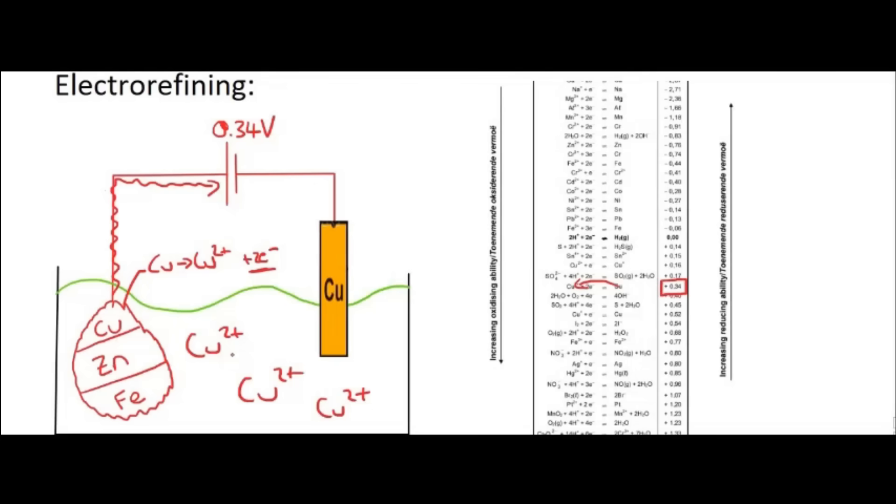But we have a little bit of a problem. Because this battery is actually going to be strong enough to cause the zinc and the iron to oxidize. Because check this out, everything above copper, look at the voltage values. They are lower, and some of them are even negative, which means that they are going to oxidize very easily.